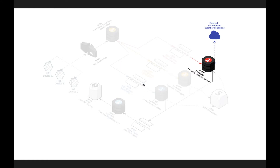We have one unique case where the temperature Lambda has to go out to an external API and retrieve weather conditions. Based on these weather conditions, the temperature Lambda will formulate new formulas and determine new alerts. And yes, it may vary depending on where the IoT devices are actually located.